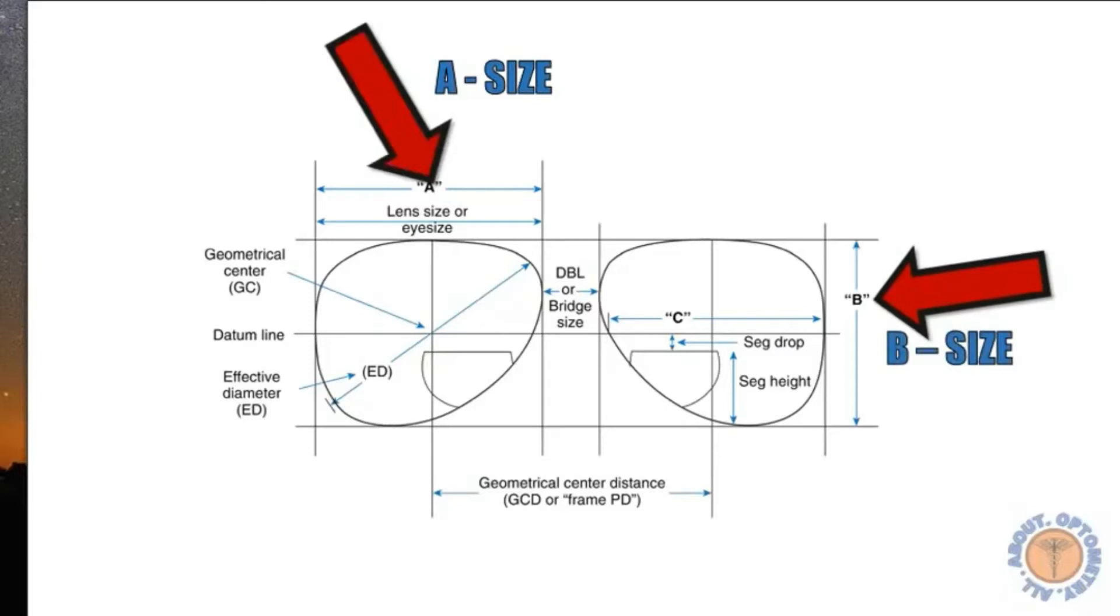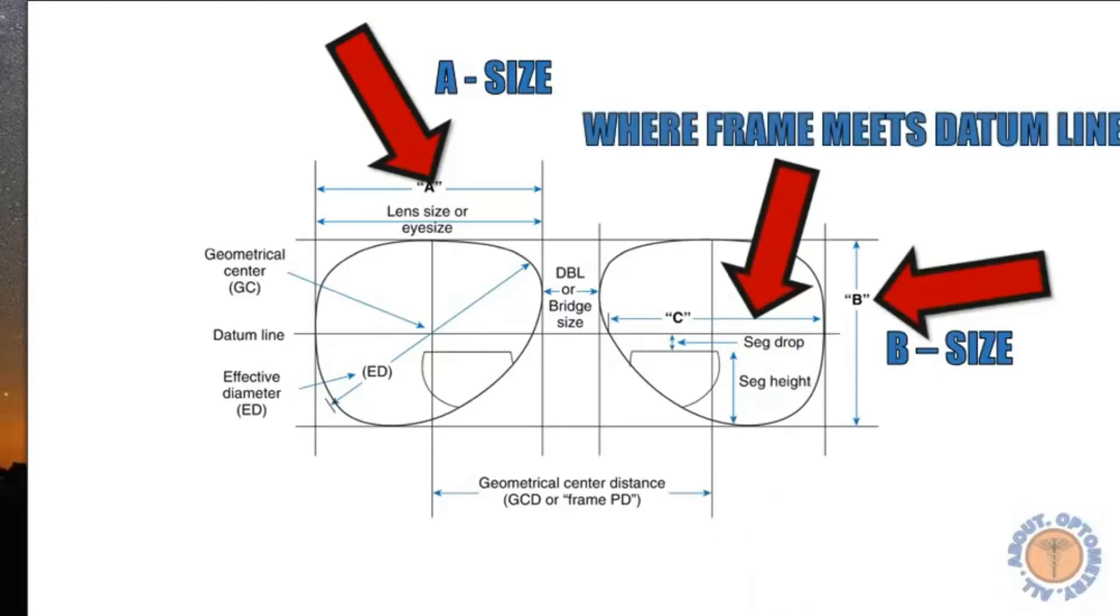Somewhere down the middle along the horizontal datum line you will see that the frame cuts the lens at the datum line and this particular dimension is called the C dimension.